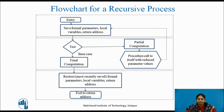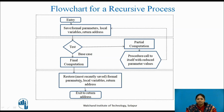Let's see the flowchart for a recursive process. Before executing any recursive process, first we need to save the formal parameters, local variables, and return address on the stack. Then we need to test for the base case. If the base case has not been reached, we perform the partial computation and call the recursive procedure again with reduced parameter values. If the base case has been reached, we perform the final computation, restore the most recently saved formal parameters, local variables, and return address, and then go to that return address.